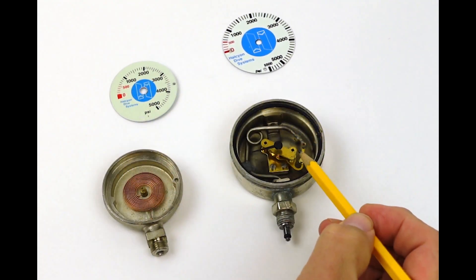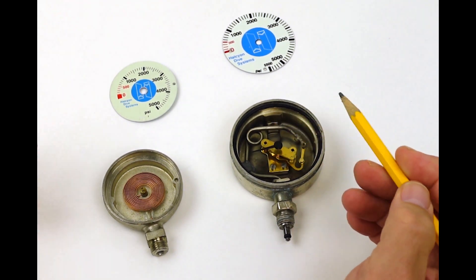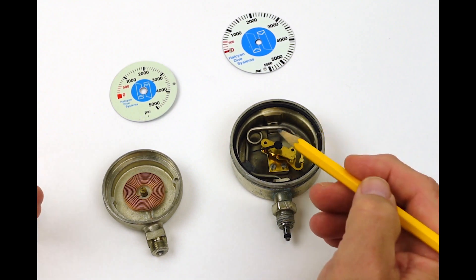The Halcyon Master SPG has a bourdon tube. This is very simplified, the way the mechanisms work.